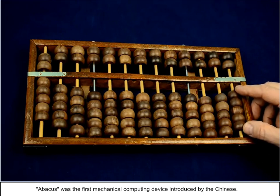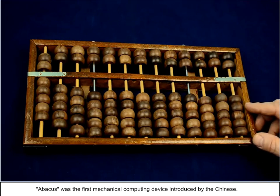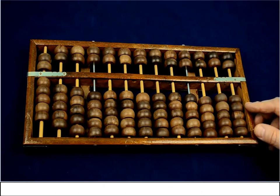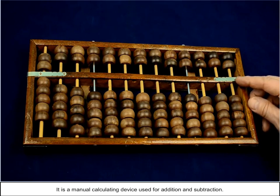Abacus was the first mechanical computing device introduced by the Chinese. It is a manual calculating device used for addition and subtraction.